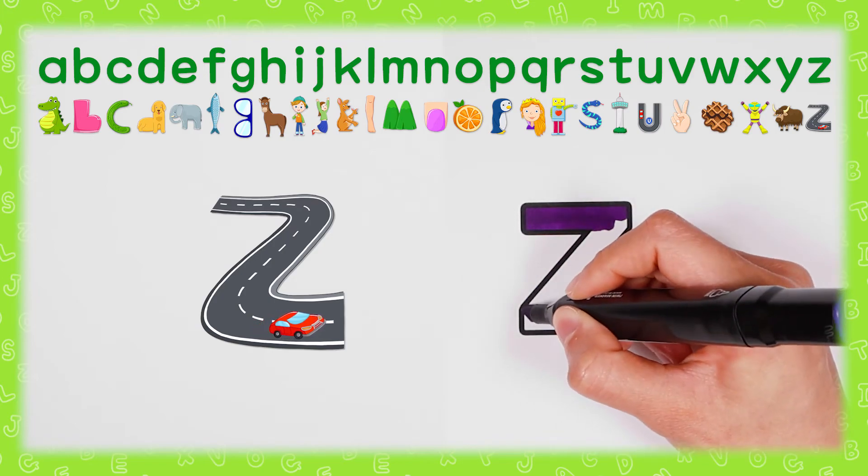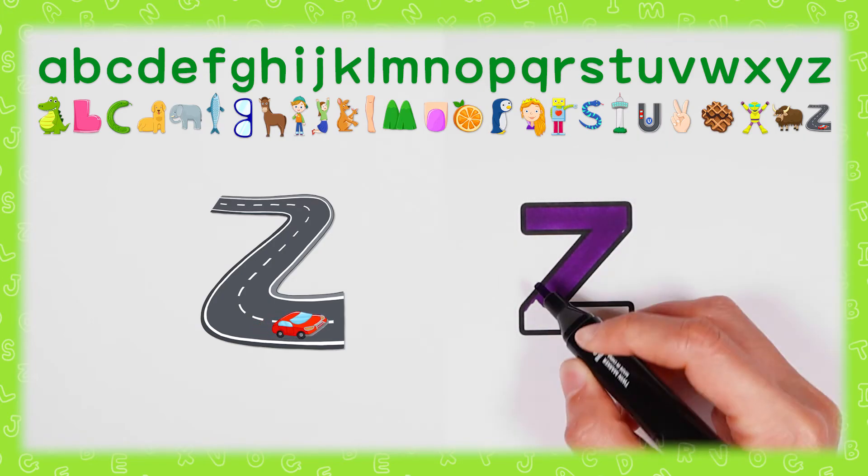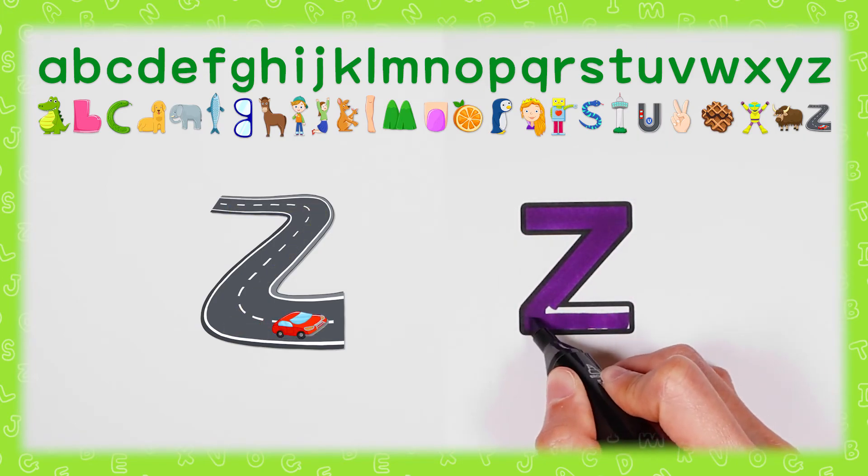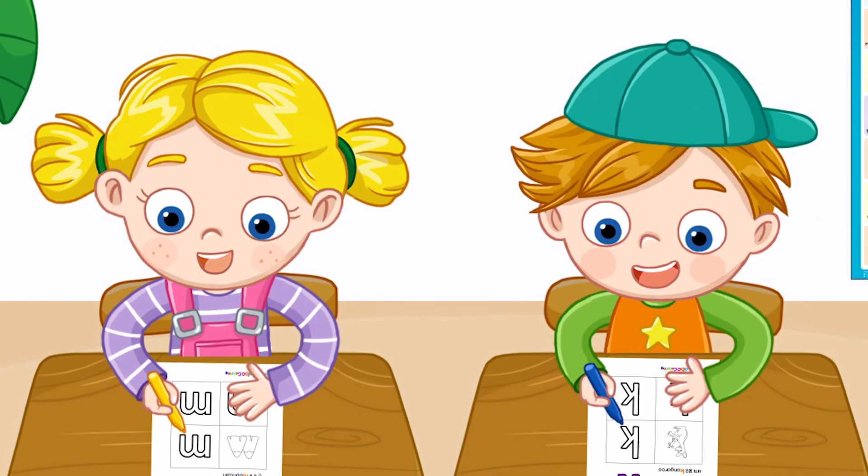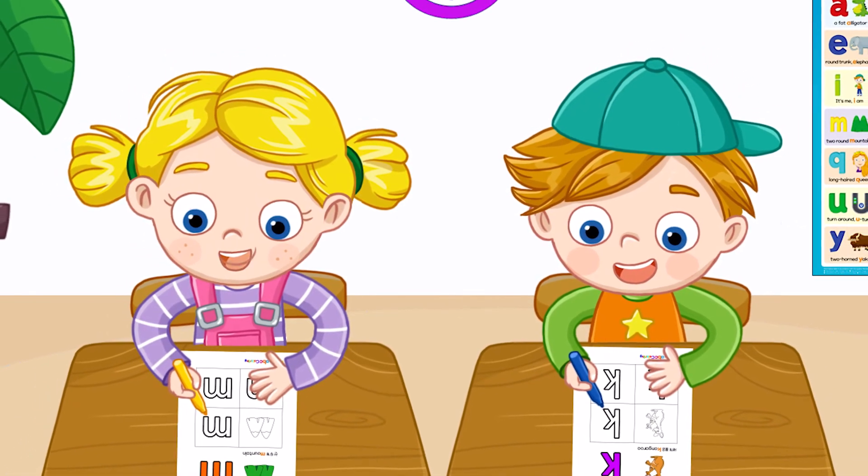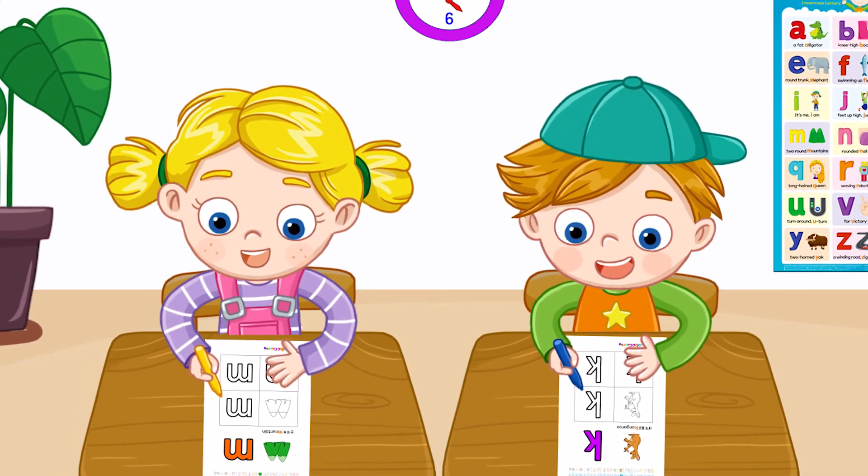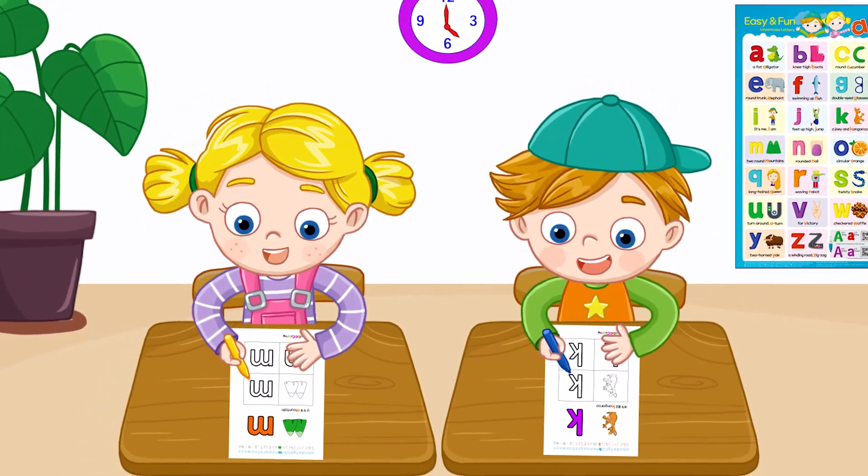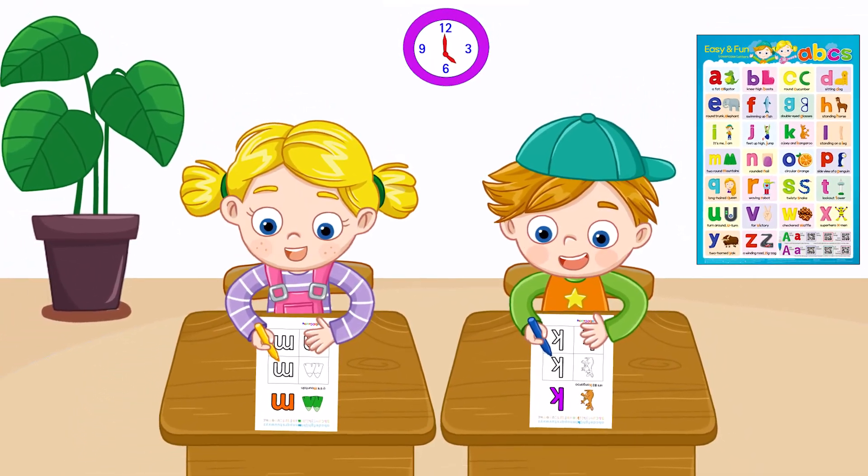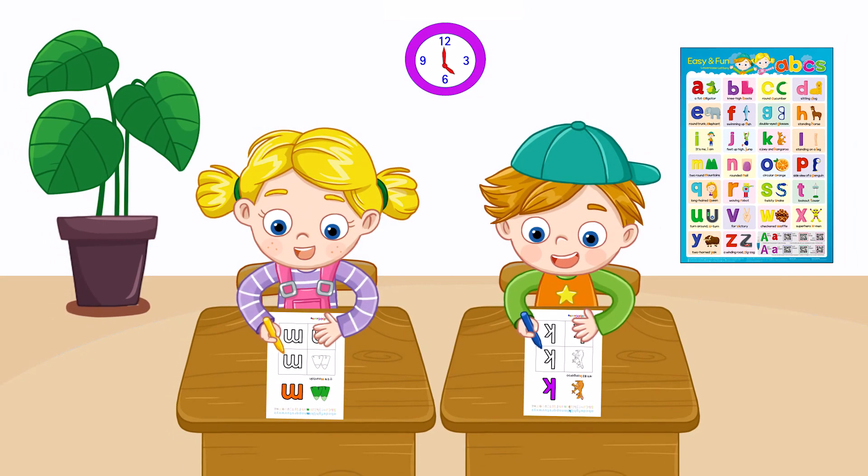Z, 구분도로 싱싹 Z Z (divided road zigzag). 재밌는 알파벳 소문자를 다 배웠다 (We've learned all the fun lowercase alphabet)!